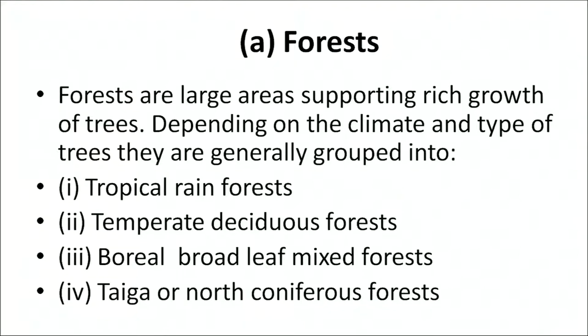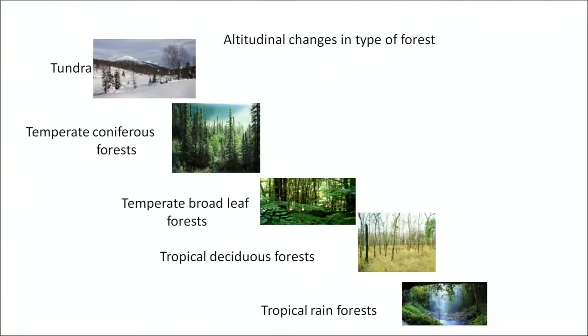The various landscapes on earth are differentiated primarily due to physical and geographical factors such as rainfall, temperature, elevation, and soil type. Now let us learn about forests. Forests are large areas supporting rich growth of trees, generally grouped into tropical rainforests, temperate deciduous forests, boreal mixed forests, and taiga or northern coniferous forests. This figure shows the altitudinal and latitudinal variation in distribution of forests, from tropical rainforests towards alpine and polar tundra forests.